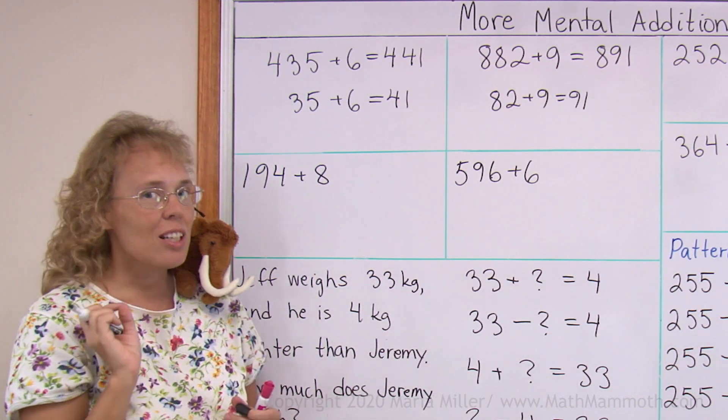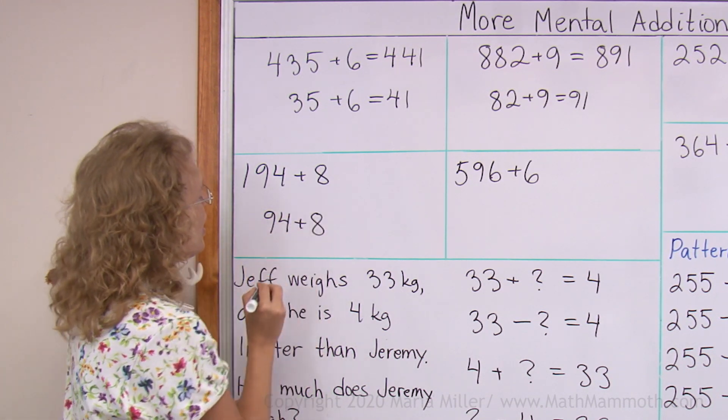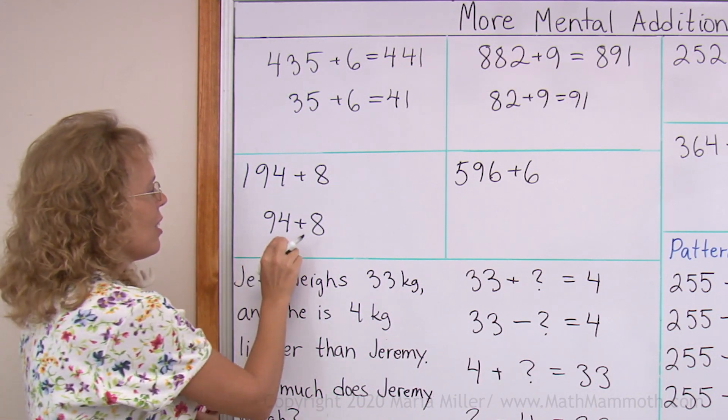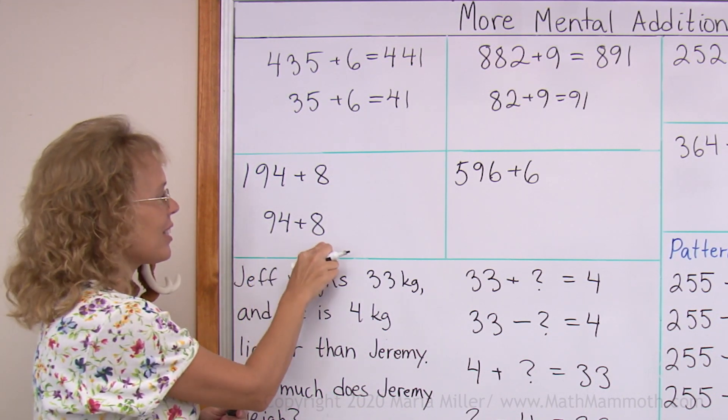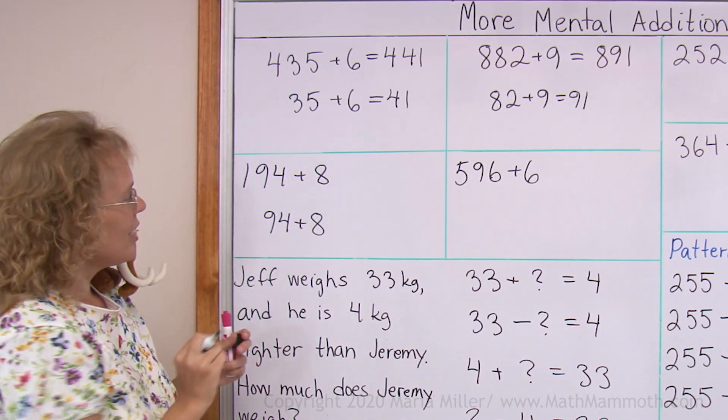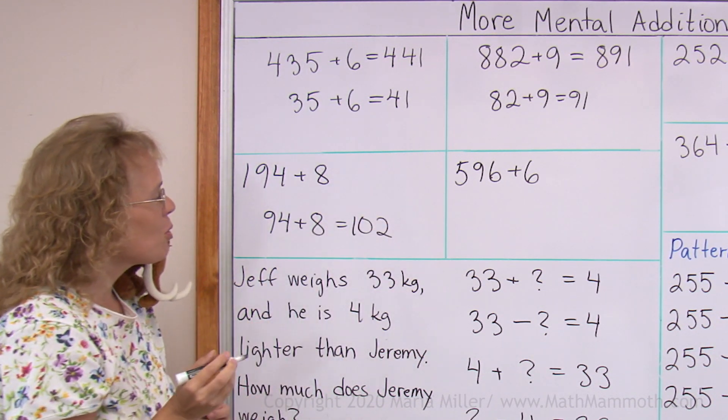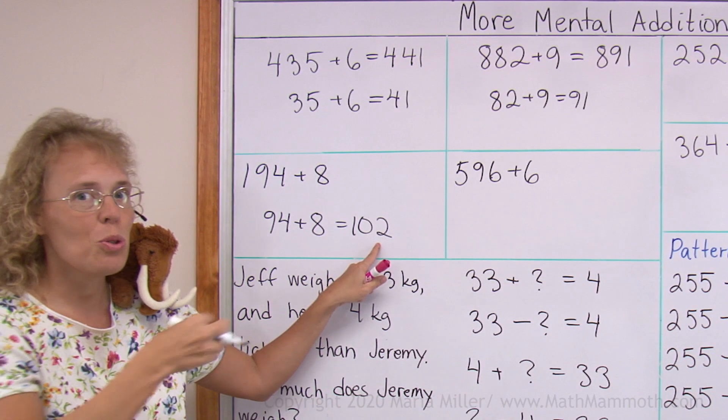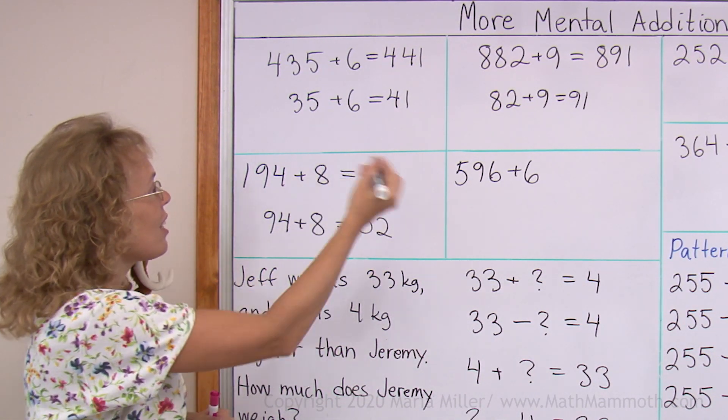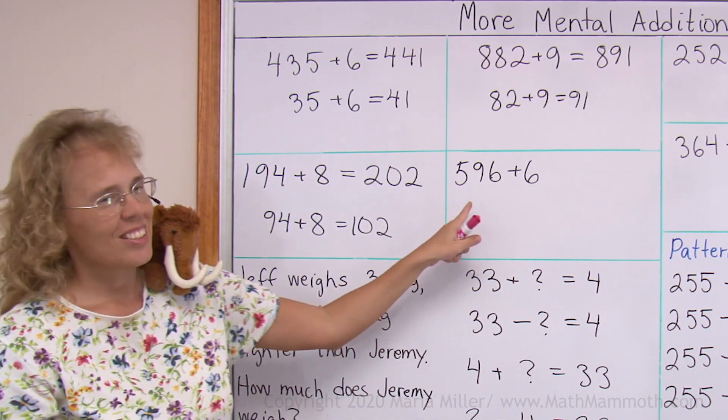Over here happens something a little bit different. Let me write this helping problem here. 194 plus 8. Can you solve that? Actually, there's another helping problem, which is 4 plus 8, which is 12. And so we have 90 and 12, which is 102. So you notice that this here goes 2 over the next 100. The same happens here. It goes to the next 100. 202. Try that one on your own.